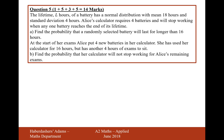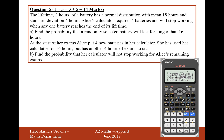Find the probability that a randomly selected battery will last for longer than 16 hours. So this is the mode in the calculator and we need to go to mode 7 and to a normal distribution. It's a normal distribution CD because we're looking for a cumulative probability of 16 hours or more. When we hit button number 2, we type a lower boundary of 16 and no upper boundary, so something like 99 or 999. Standard deviation of 4, mean of 18 hours. Type all of that data in and you get an answer of 0.6914.